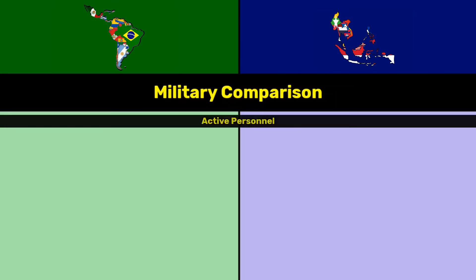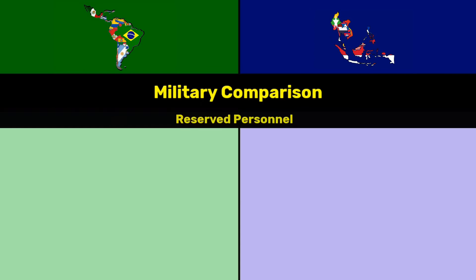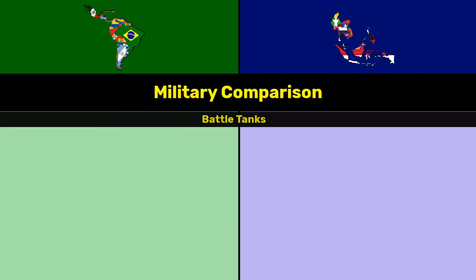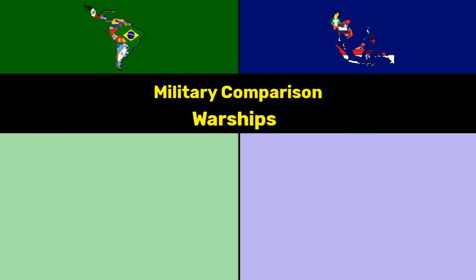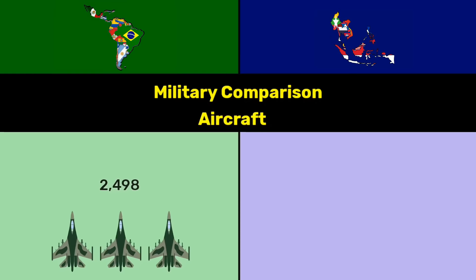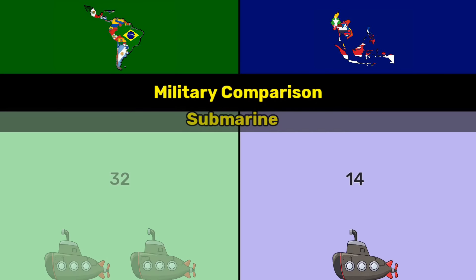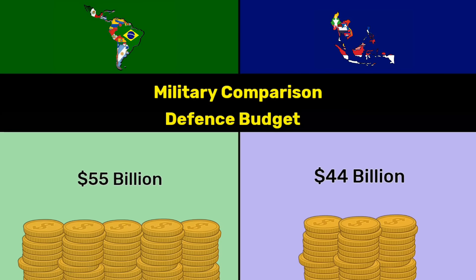Military comparison — active personnel: 1.4 million versus 2.1 million. Reserve personnel: 2.12 million versus 6 million. Battle tanks: 4,030 versus 3,840. Warships: 520 versus 1,053. Aircraft: 2,498 versus 1,815. Aircraft carriers: 1 versus 1. Submarines: 32 versus 14. Defense budget: 55 billion dollars versus 44 billion dollars.